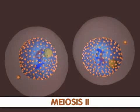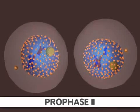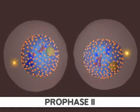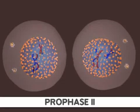Meiosis II is similar to mitosis. The first stage of meiosis II is prophase II. Again, chromosomes condense, the nuclear envelope breaks down, and the spindle apparatus forms.